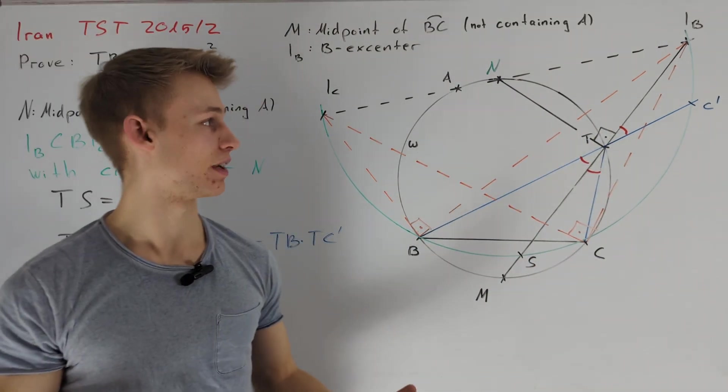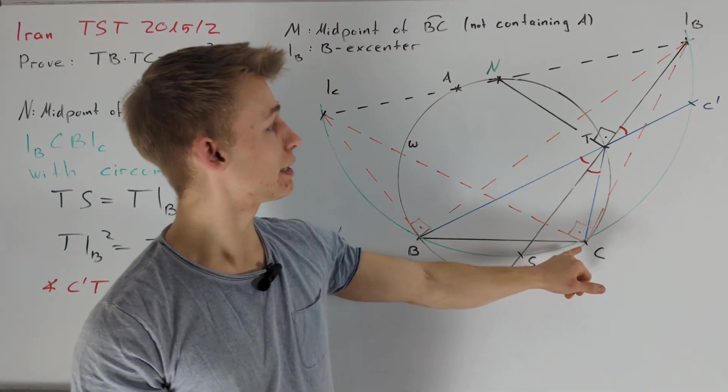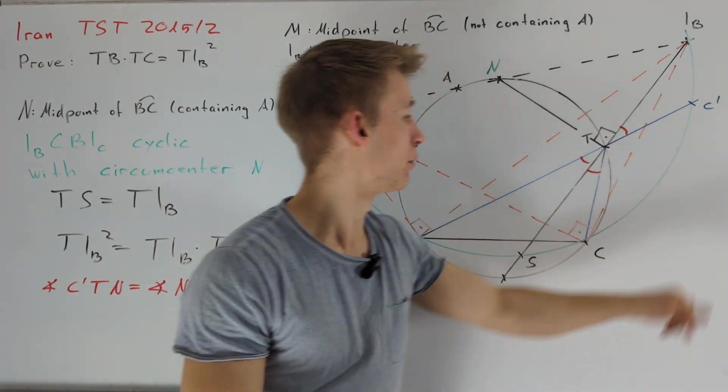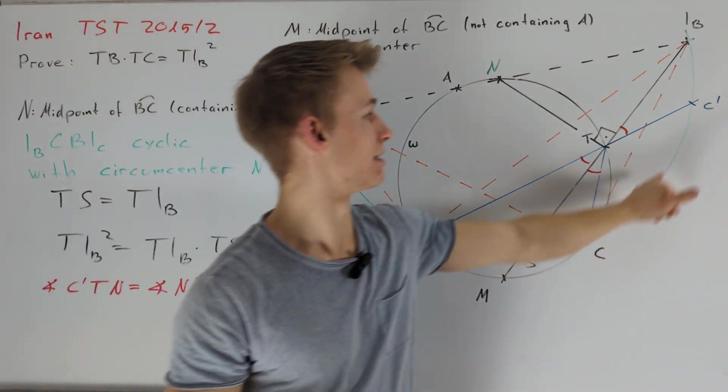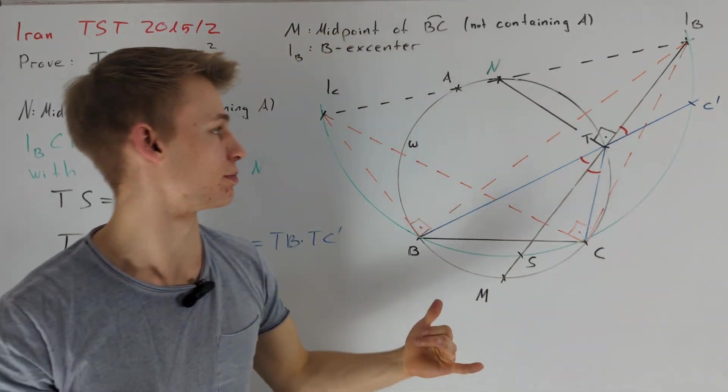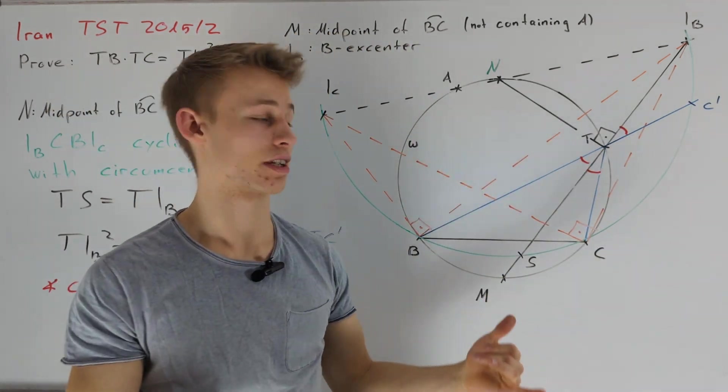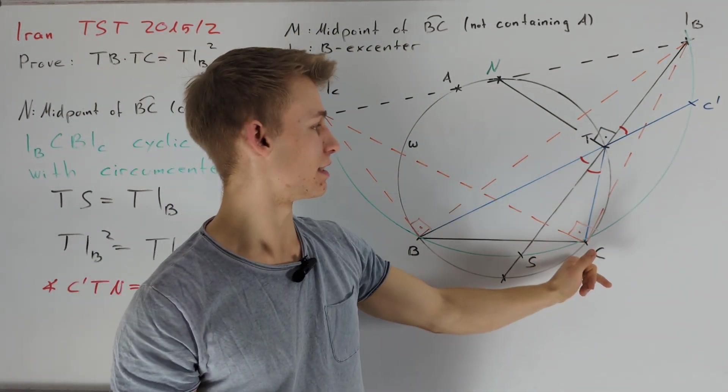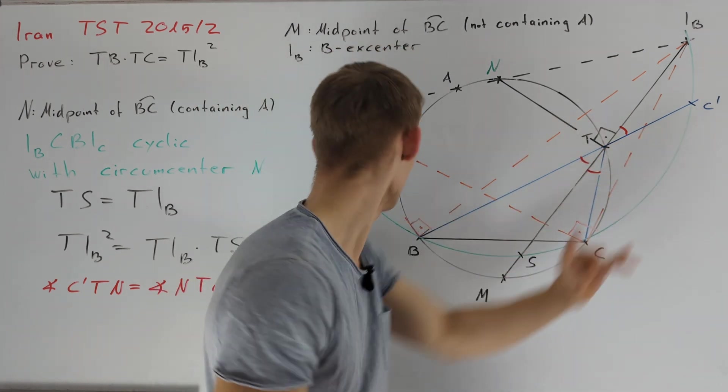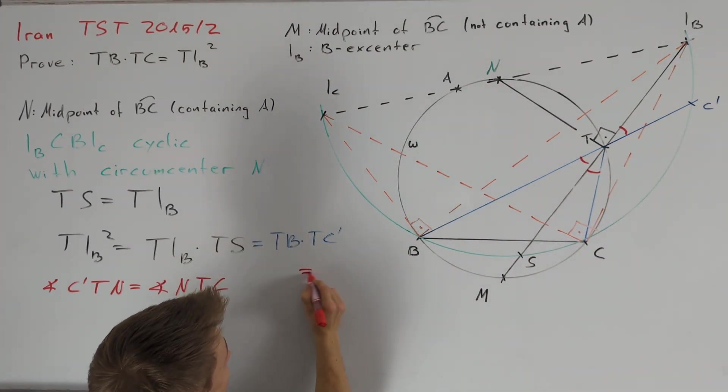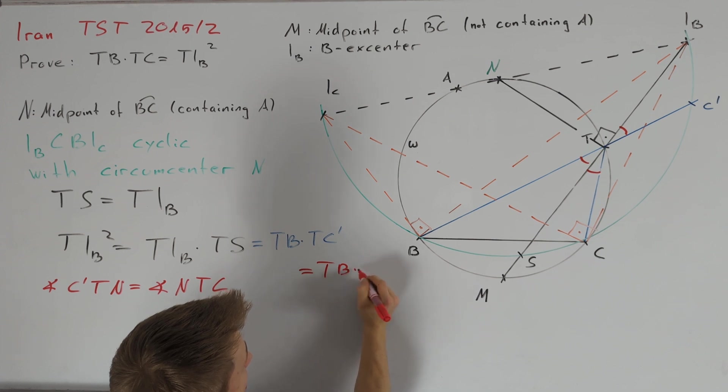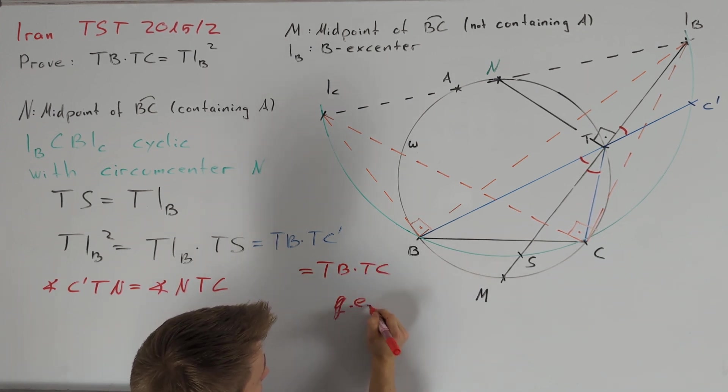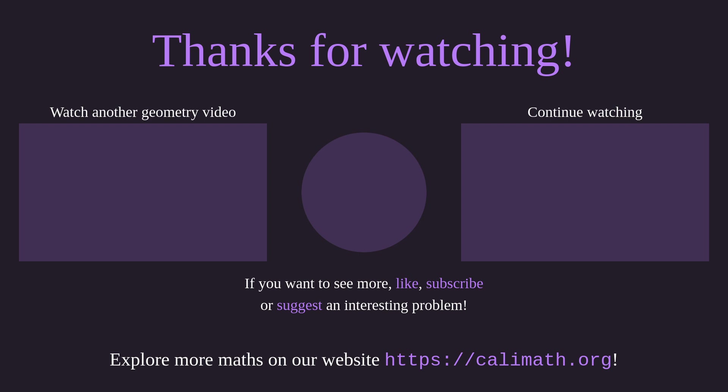Let's write this down. Together with the fact that NC is equal to NC prime, we conclude that C and C prime are symmetric with respect to NT. This directly implies that TC is indeed equal to TC prime. So, we have that this product here is equal to TB times TC and therefore we are done.